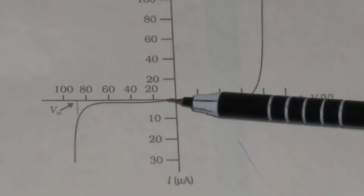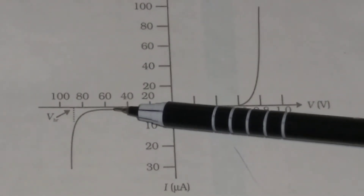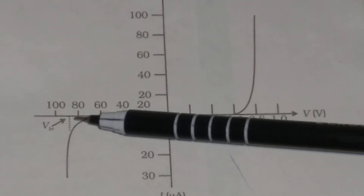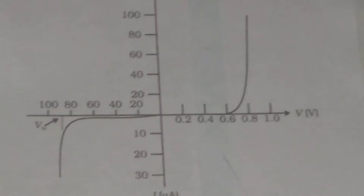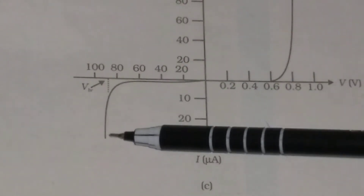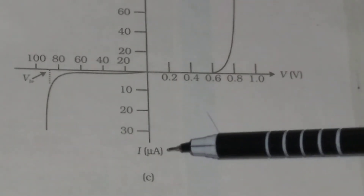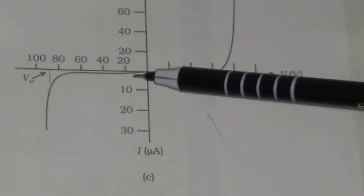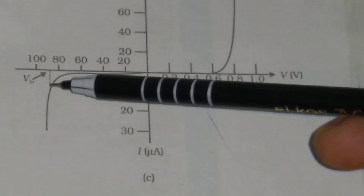It is very important that the reverse bias current is independent of the applied voltage and depends upon the concentration of the minority carriers. But at the breakdown voltage, the reverse bias current increases sharply — there is a sharp increase in reverse bias current. That is why general purpose diodes are not used beyond the reverse saturation current region.